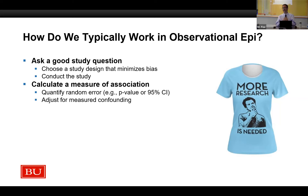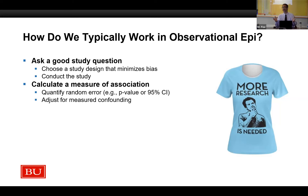Then we adjust for measured confounding. Say you're doing a study of alcohol consumption and lung cancer — you collect data on smoking because you know that's going to be an important confounder. You would never say, 'We collected data on smoking but we don't really feel like adjusting for it; we're just going to publish and leave it alone.' You would never get away with that. You have to adjust for the things we think are important confounders.